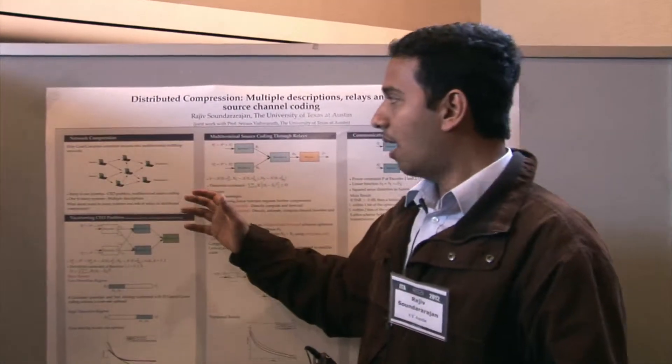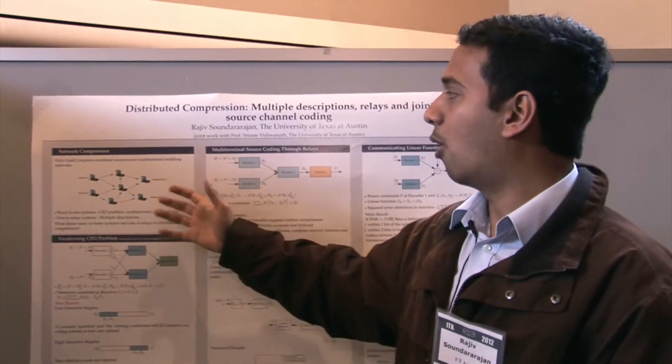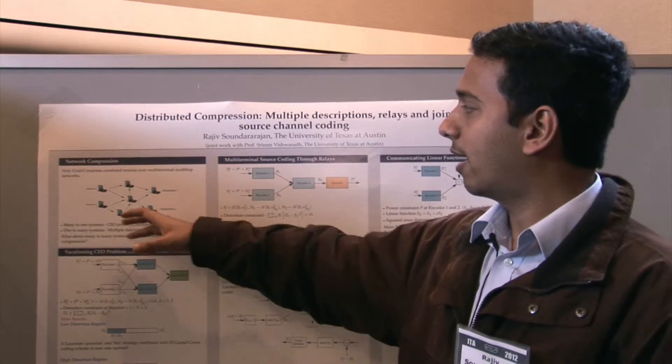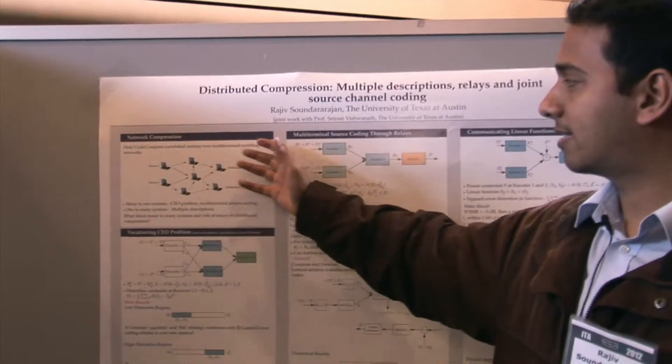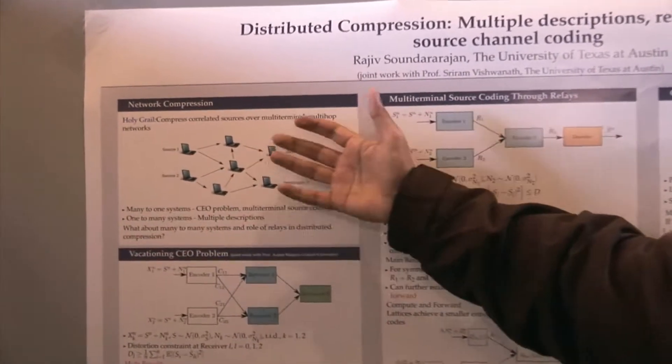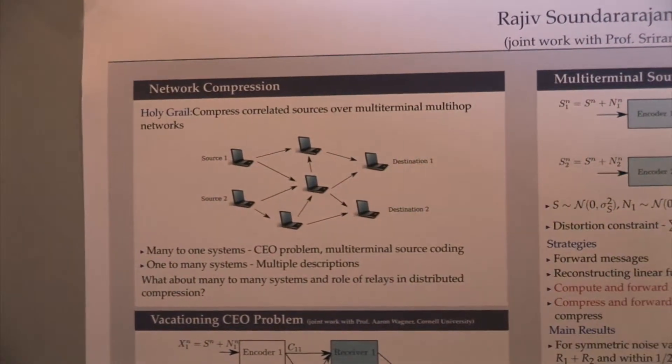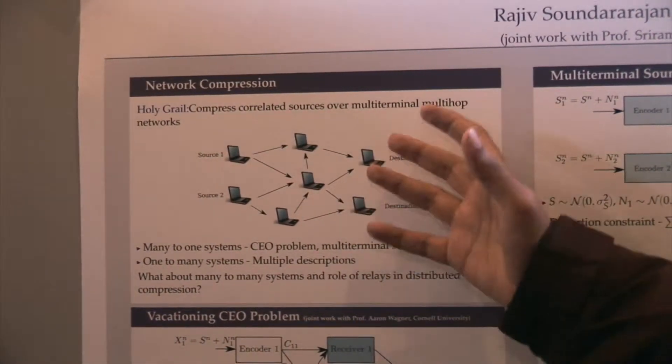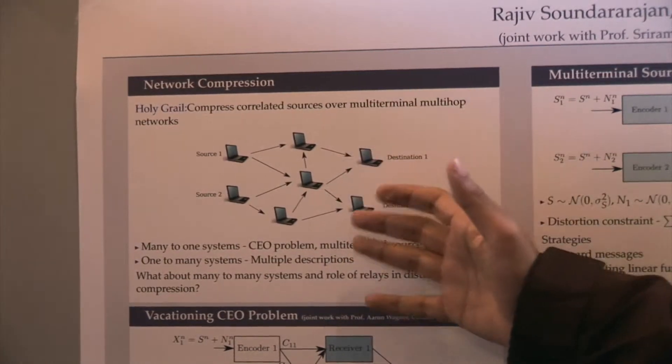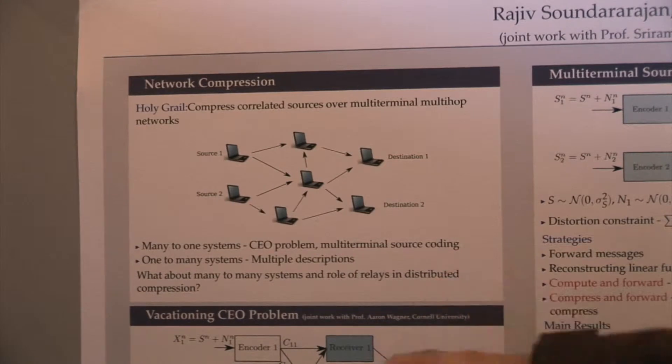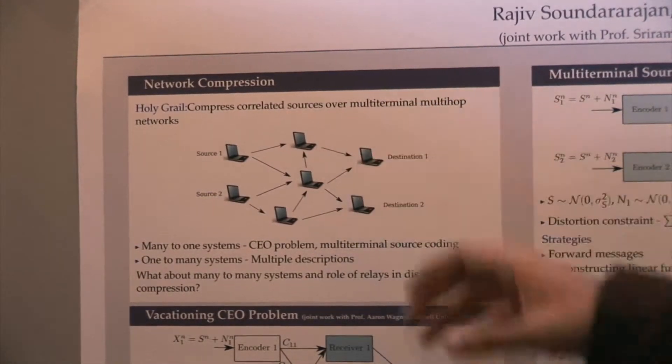What we'd like to really study is how to compress in large networks. Consider an arbitrary network with multiple sources, multiple destinations, and relays. The key question is, how do you develop compression algorithms in such systems? Because it's difficult to analyze such a large system at one go, we try to study smaller sub-problems towards obtaining a better understanding of such a large system.